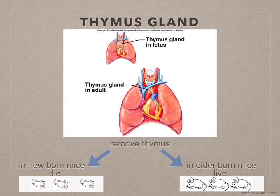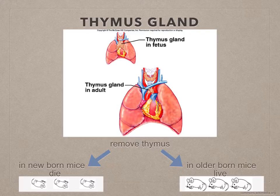Interestingly, if you remove the thymus gland from newborn mice, this will lead to death due to infection since there are no lymphocytes. If you remove the thymus gland in older mice, it has no effect.